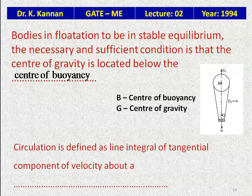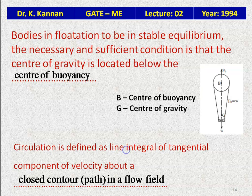Circulation is defined as the line integral of the tangential component of velocity about a closed contour — that is, a closed path — in the flow field.